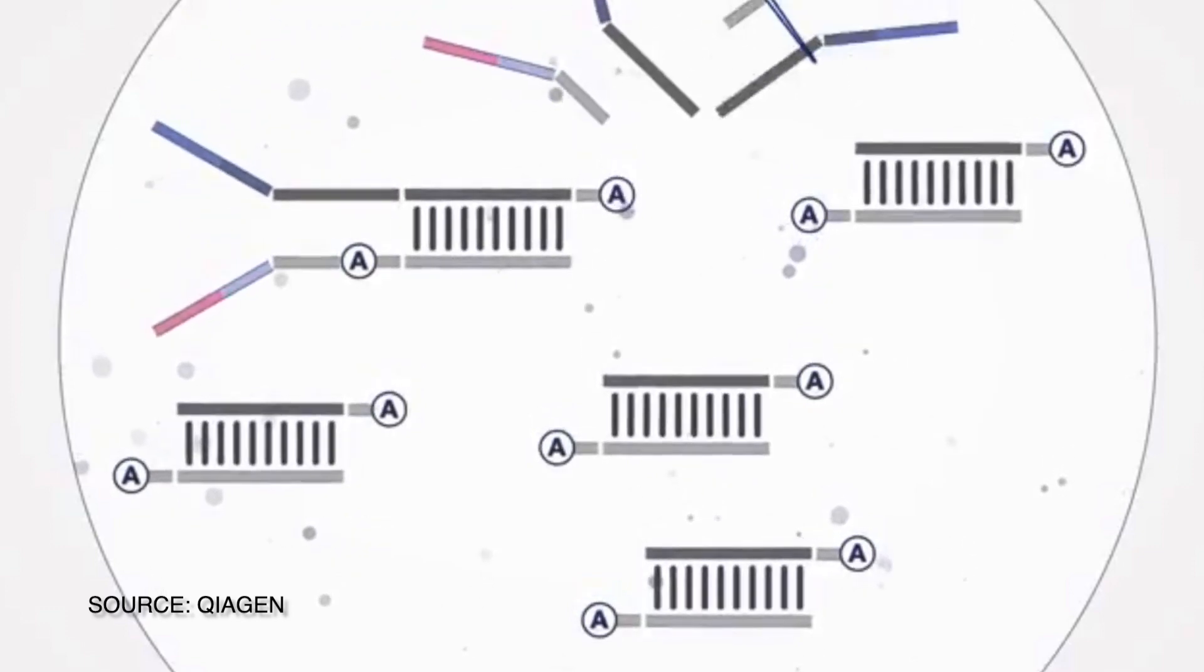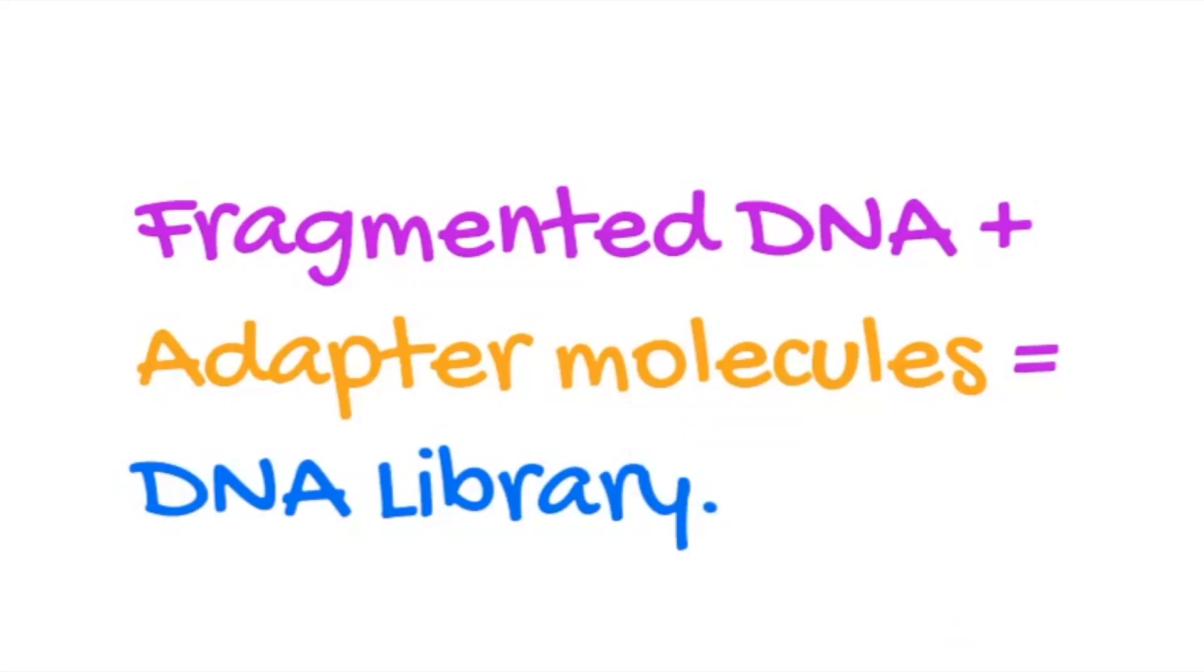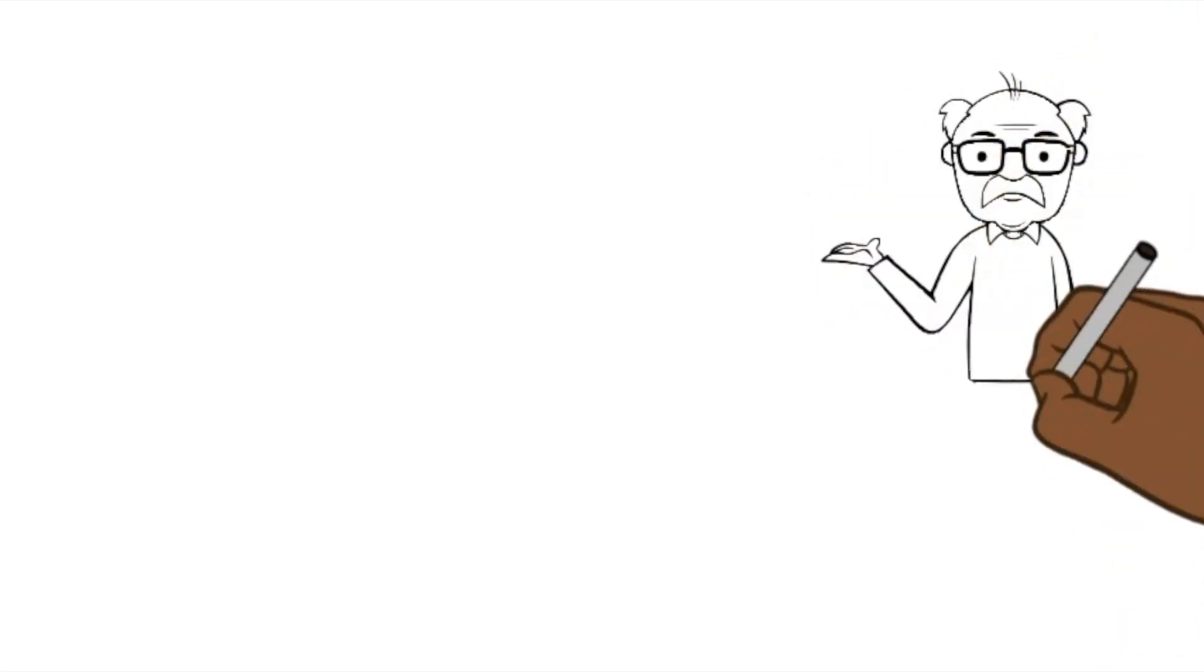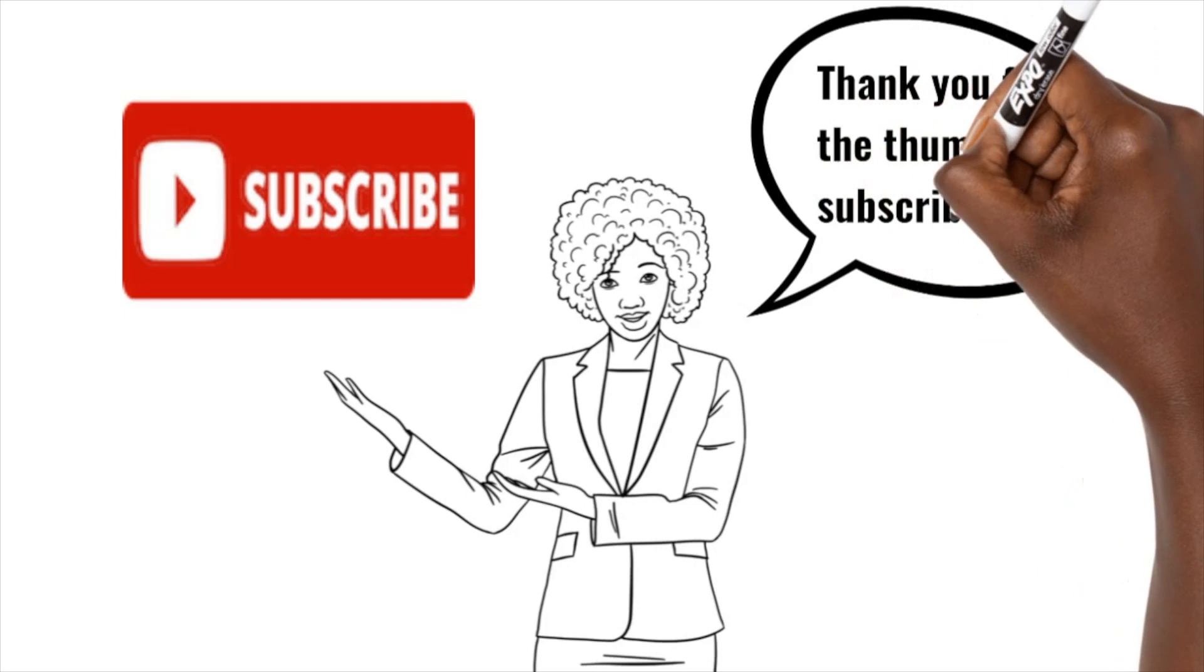These are called adapters because they allow the DNA to bind to flow cells used for sequencing. The DNA adapter molecules are now called a DNA library. That brings us to the end of DNA fragmentation for sequencing purposes.